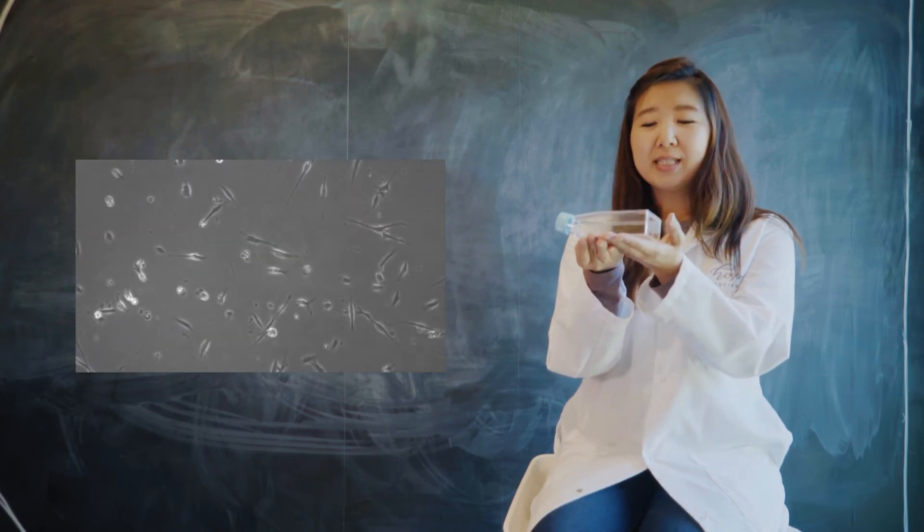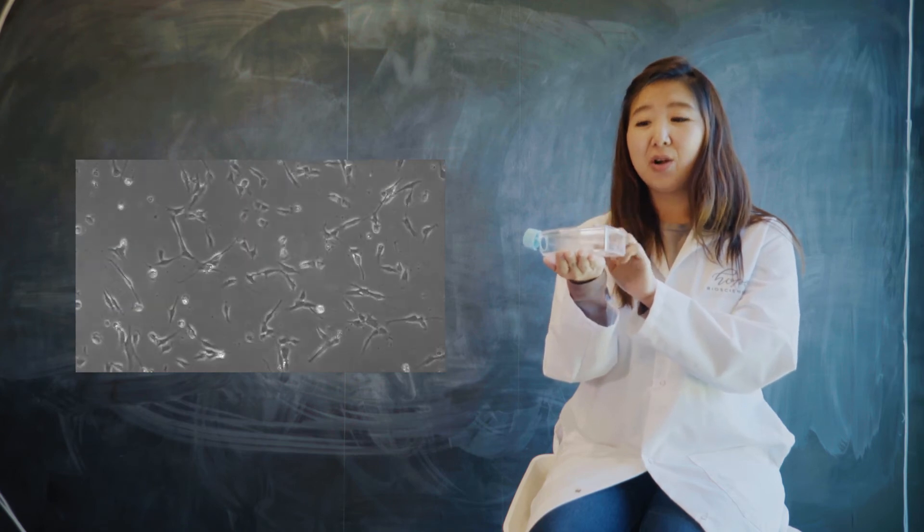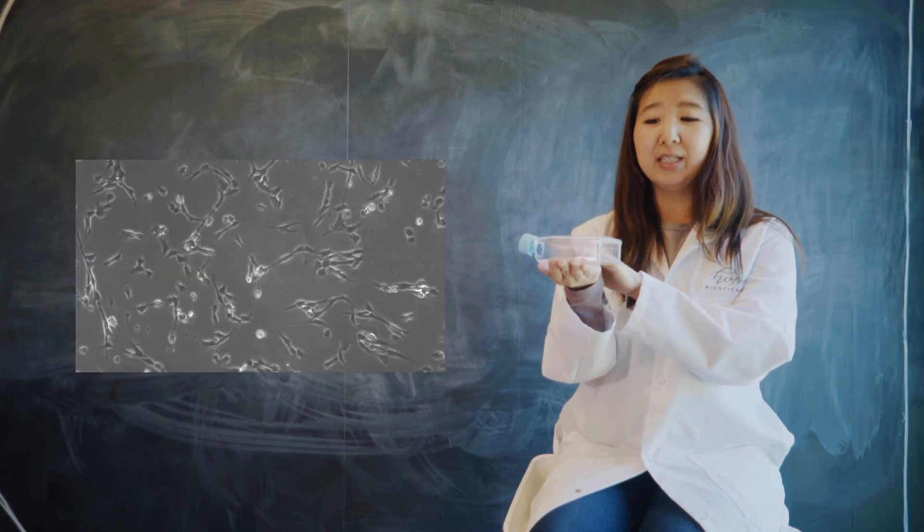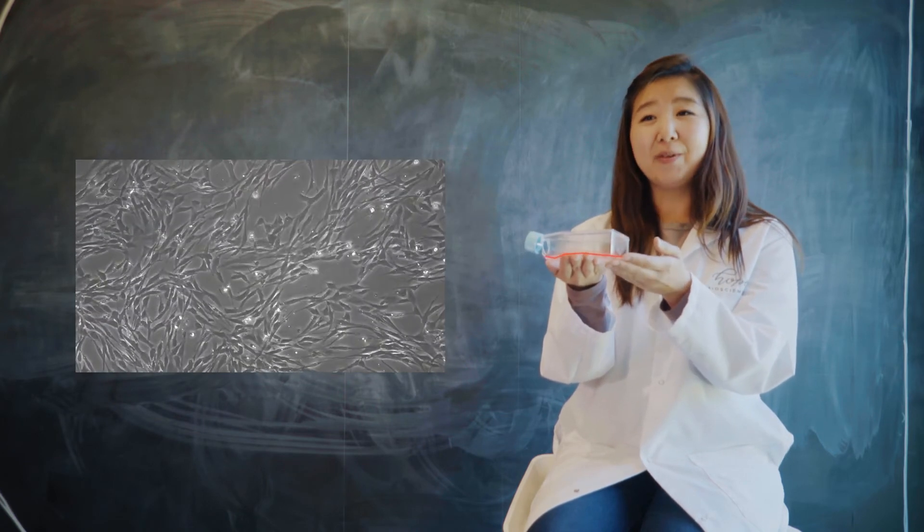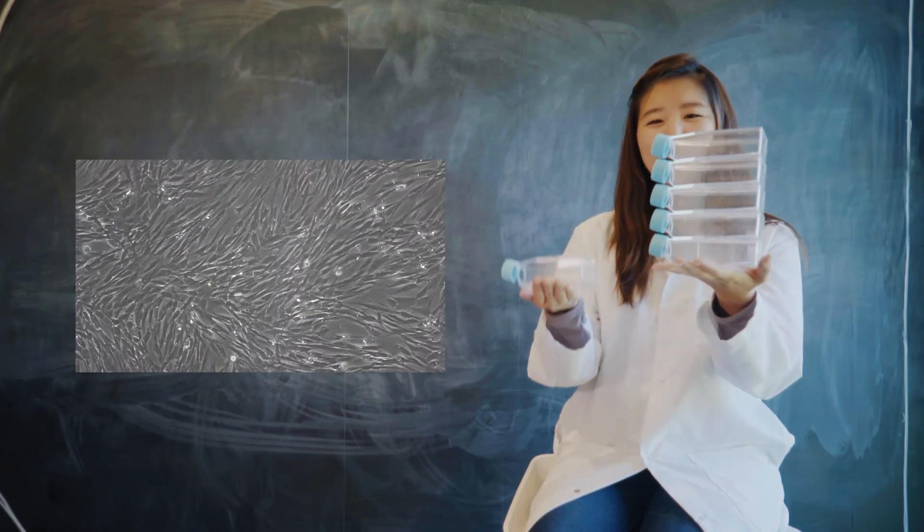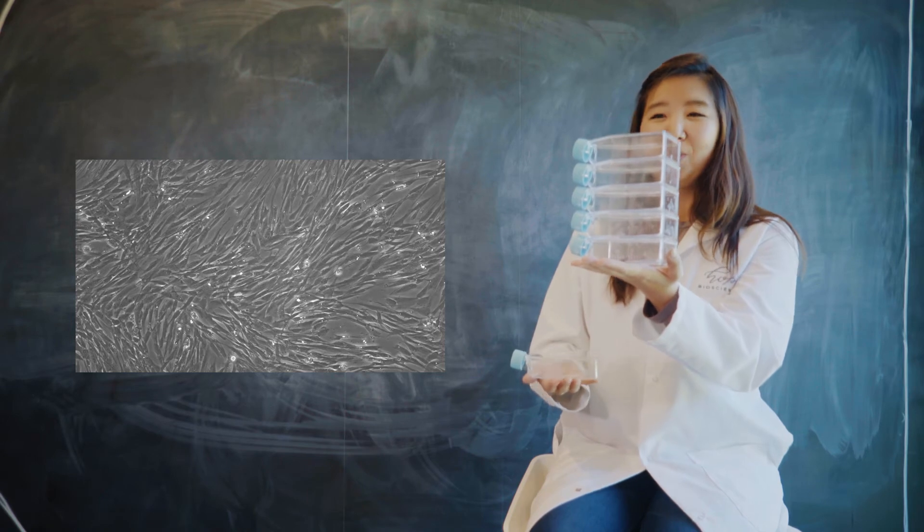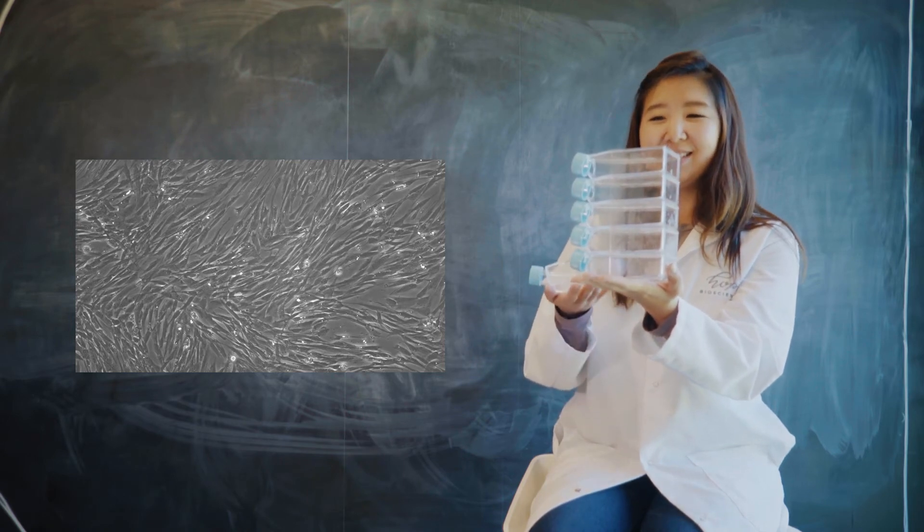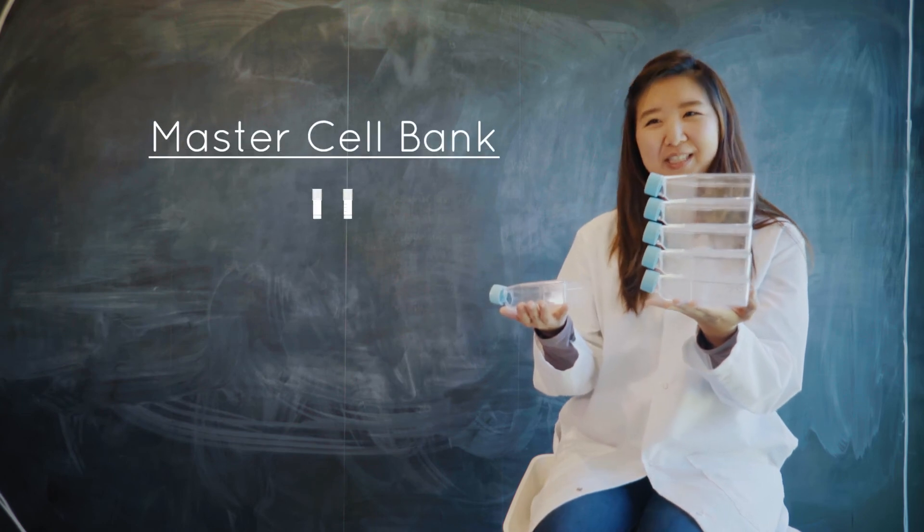In the process of growing, they will begin by creating identical copies over and over and over again until they fill the bottom of this flask. Once filled, we'll take some of those cells and reseed more flasks. With an exponential amount of cells grown, we can then harvest them to create what's known as your master cell bank.